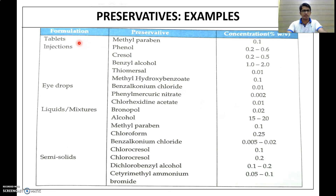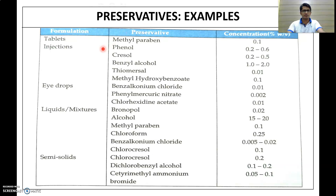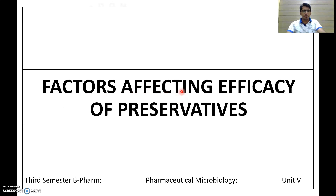Examples of preservatives in different formulations: in tablets, methyl parabens at 0.1% w/v concentration; in injectables, phenol, cresol, benzyl alcohol, thiomersal, and methyl hydroxybenzoate; in eye drops, benzalkonium chloride, phenylmercuric nitrate, and chlorhexidine acetate; in oral liquid mixtures, propylene glycol, alcohol, methyl paraben, chloroform, and benzalkonium chloride; in semi-solid preparations like creams and ointments, chlorocresol, dichlorobenzyl alcohol, and cetyl trimethylammonium bromide.